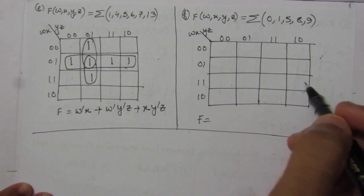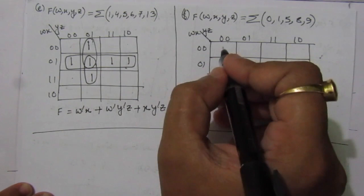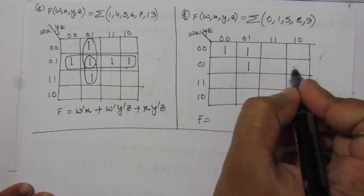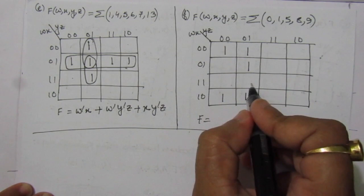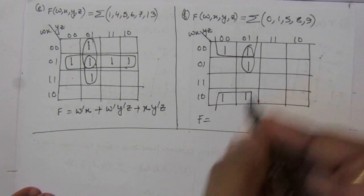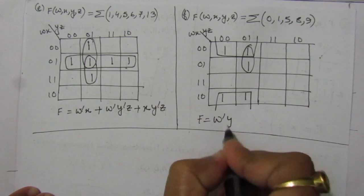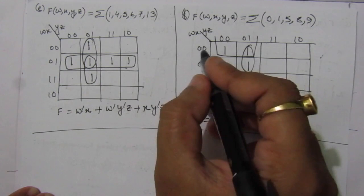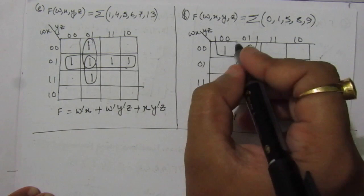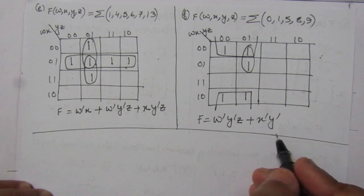For the last part, problem F, we have four input variables W, X, Y, Z and a sum of minterms. Ones are placed for the given minterms on the K-map. For the first combination, we get W-bar and Y'Z. For the second combination, W is cancelled, then we have X-bar, and from that side Y-bar. The simplified boolean expression for part F is F = W'Y'Z + X'Y'.